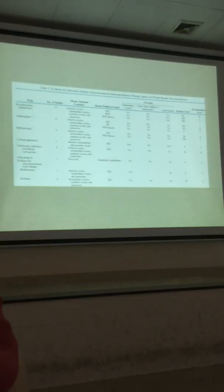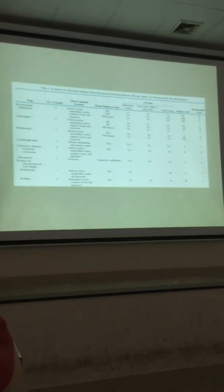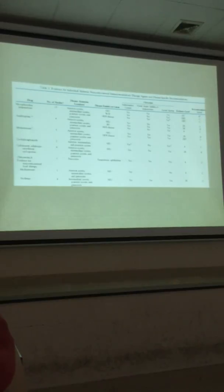This table goes over the evidence level and anatomic location of the various agents, and what type of uveitis they've been shown to be helpful for. I would basically just use it as a reference. Methotrexate has been shown to be slightly more helpful for anterior uveitis and posterior uveitis as a general rule.